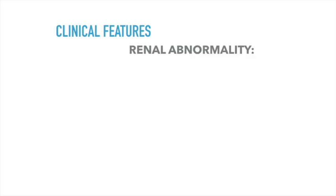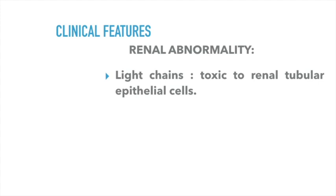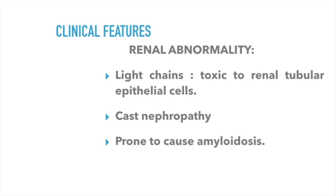The kidneys are affected by the light chains. Being smaller in size, they cross the glomeruli and are toxic to the renal tubular epithelial cells. When they occlude the renal tubules, they lead to cast nephropathy. Due to the secretion of AL light chains by the malignant plasma cells, they cause renal amyloidosis and commonly present as chronic kidney disease.